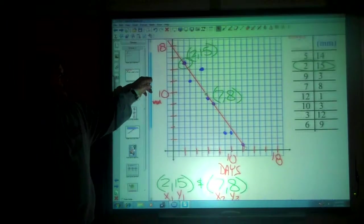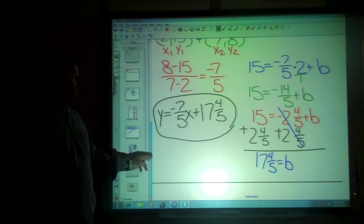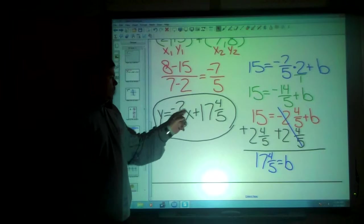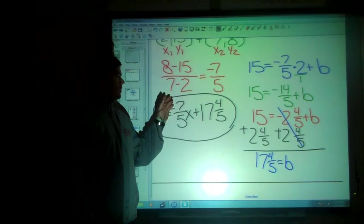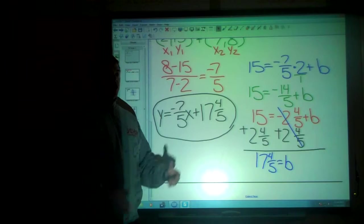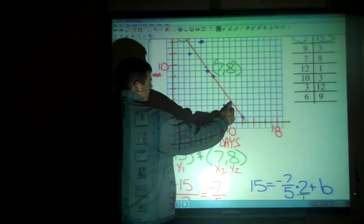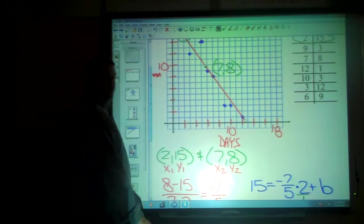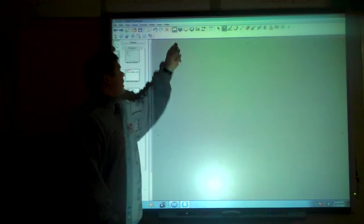Y equals the slope of negative 7 fifths X plus 17 and 4 fifths. All based on a real life situation. Maybe we're a scientist and we've been collecting data. And we would like an equation. Now we can use this equation. We could say, how old is the tadpole? The tadpole is 10 days old. We plug in the 10. You're going to get negative 7 fifths times 10 is going to give you negative 14. You add negative 14 plus 17 and 4 fifths. And you're going to get 3 and 4 fifths for a 10 day old. Looks pretty close to what we have. Seems to fit our equation. So the graph represents a way of seeing that in real terms.